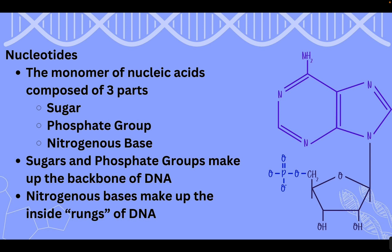Macromolecules are big because they're made up of repeated subunits or building blocks, and the scientific word for this building block is monomer. The monomer of nucleic acids is the nucleotide. Nucleotides consist of three parts: a sugar — deoxyribose — which has a pentagon shape and is a pentose sugar; a phosphate group, where phosphorus is connected to the sugar; and a nitrogenous base, made up of nitrogen rings. Together, these make up our nucleotide.